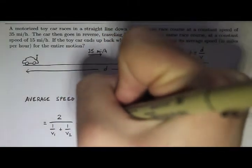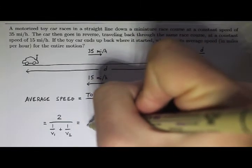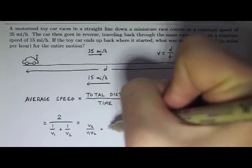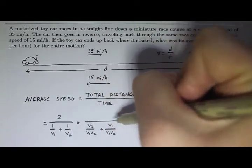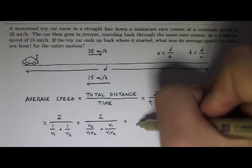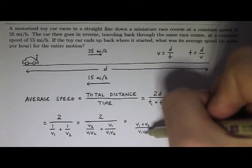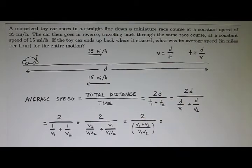So this is a messy compound fraction here. So let's add these things together. We have to give them a common denominator that will be V1, V2. And so I can make this V2 over V1, V2 plus V1 over V1, V2. And now that I have a common denominator, I can add them. So the numerator will just be V1 plus V2. And the denominator will be V1, V2. And this whole thing is still underneath 2.